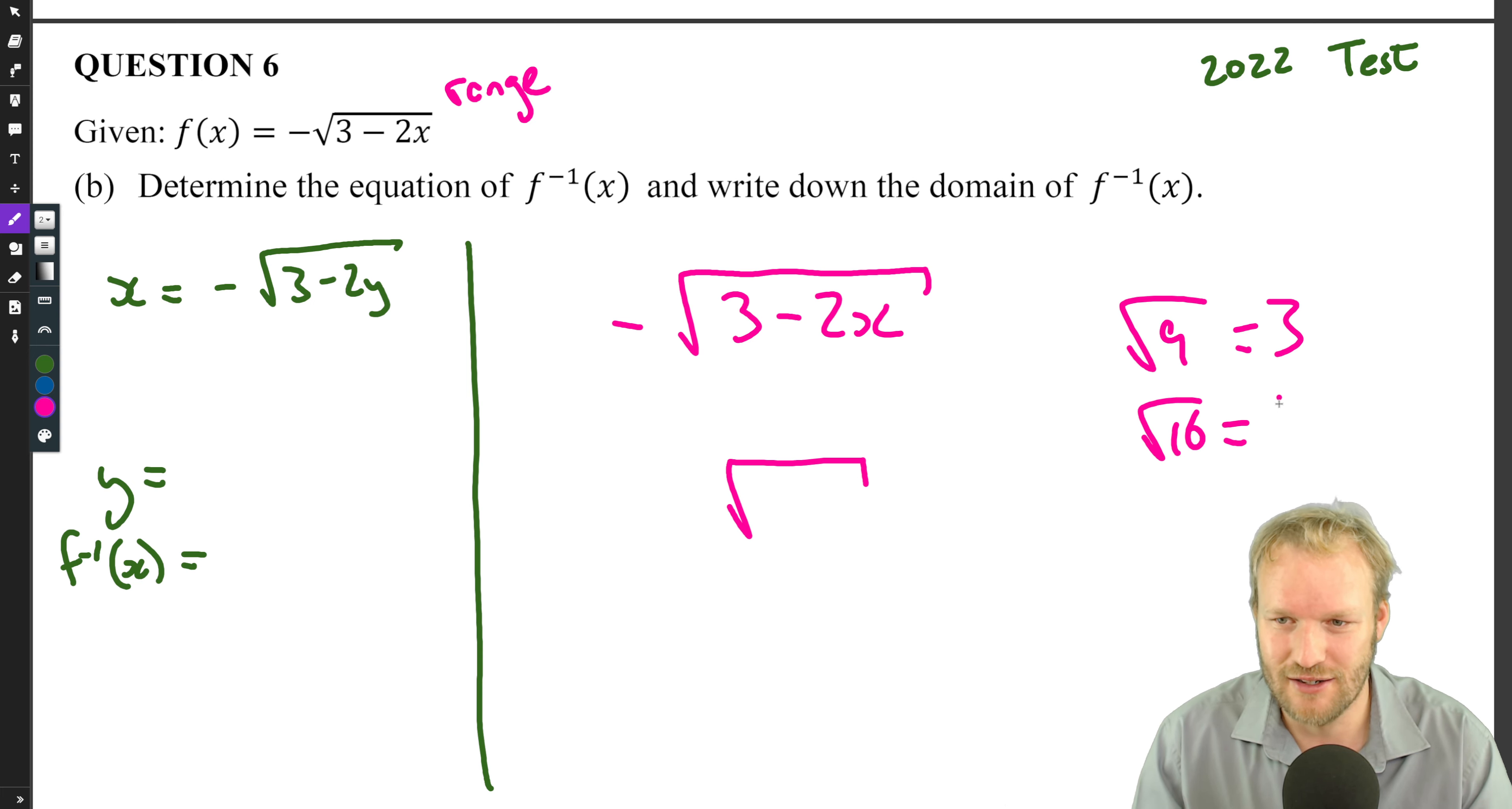So the square root of nine, well that's three, great stuff. Square root of 16, that's four. And I said always positive which isn't quite true because the square root of zero is zero, right? But the square root of something, well it's never going to be a negative number.